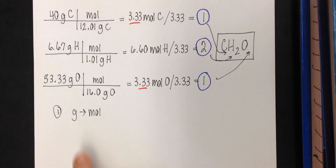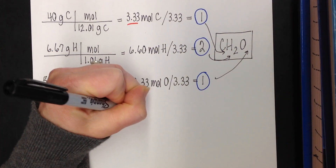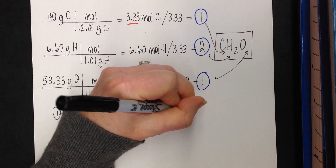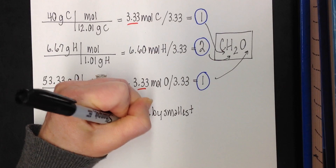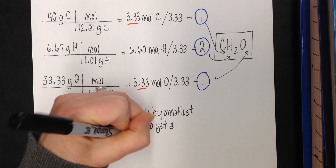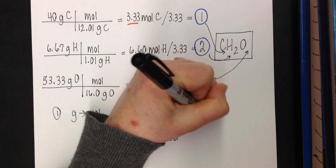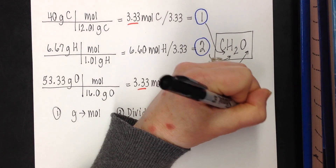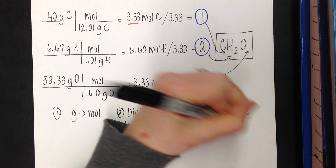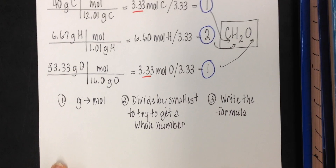You can see these are your new subscripts. Here are the steps condensed: gram to mole, divide by the smallest, that gives a whole number. If you get a .5, multiply everything by 2, then write your formula. Sorry about the intercom announcement — that's life in school. We get occasional announcements even when there are no students in the building. Welcome back to high school.